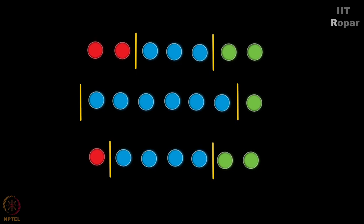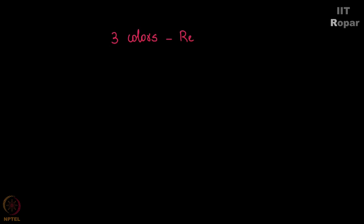It falls under combinations with repetitions. So how do we analyze this? You see there are 3 colors here: red, blue, and green. And I have to pick 7 balls of these colors.